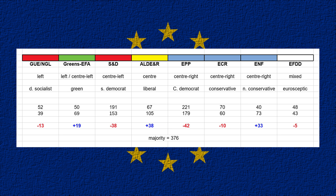Next we have S&D. They are the mainstream centre-left. A lot of these parties have the words Social Democrat in their name. Social democracy is a system where capitalism remains, democracy remains, but there's major state intervention in the economy in terms of nationalising assets and industries. This contrasts with democratic socialism, which does away with capitalism but retains democracy.